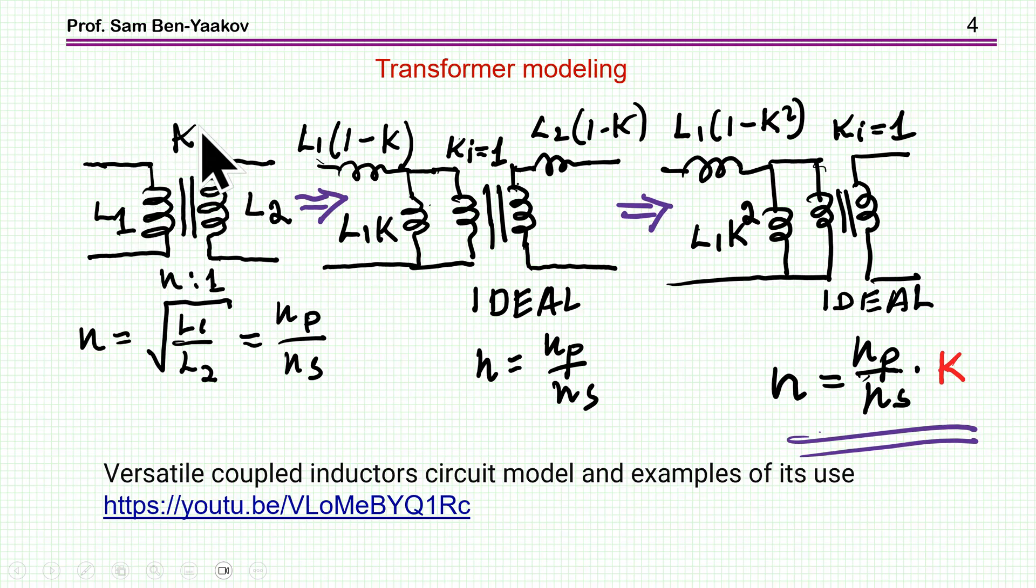Starting with this physics-based model, we can represent it, first of all this is the classical way, as a network that includes the leakage here of the primary, which is L1(1-k), and then this is the magnetization reflected to the primary. This is an ideal transformer. This transformer has a coupling coefficient of 1. And then we have here the secondary leakage, L2(1-k).